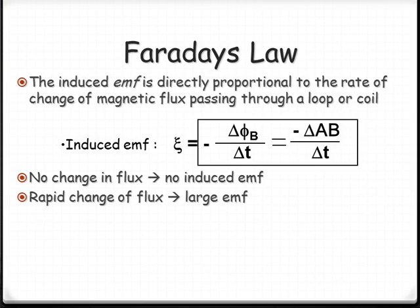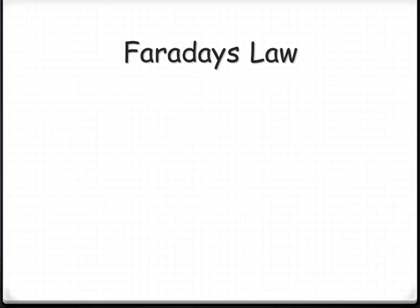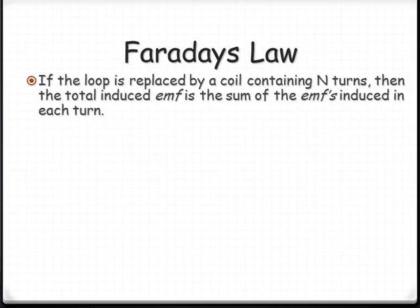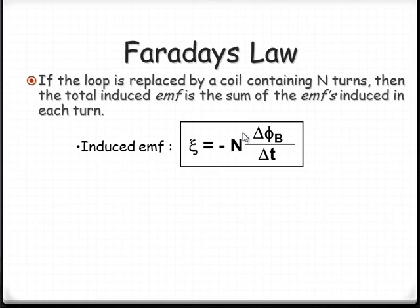So what happens if we have, instead of just a single loop, we have multiple loops. So basically, it's the sum of the EMF for every single coil. So we multiply the induced EMF by N, the number of coils, multiplied by the area times the field strength, or the flux, over time.